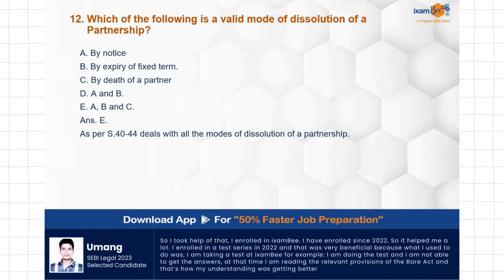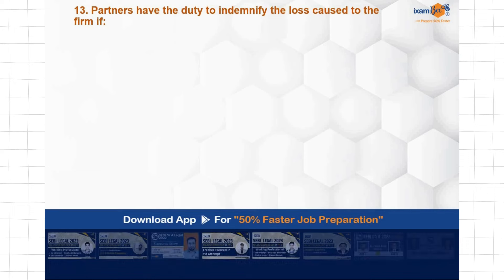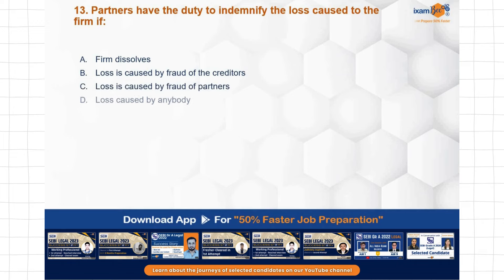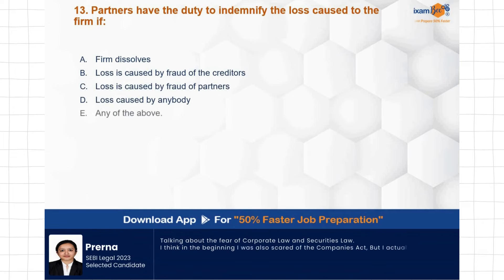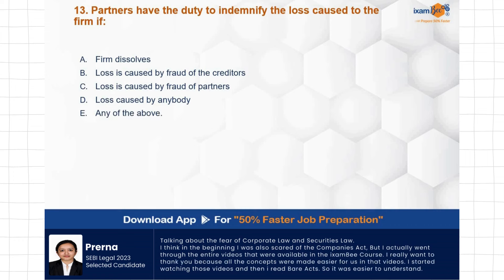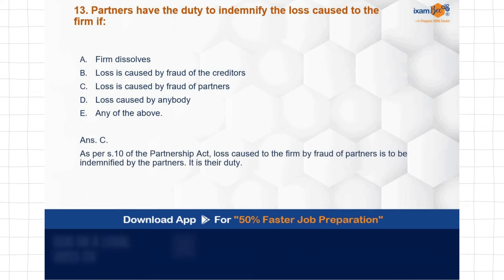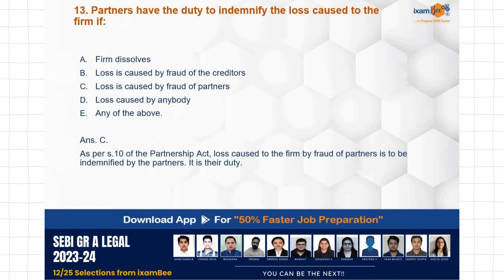Question: Partners have the duty to indemnify the loss caused to the firm if — the firm dissolves, the loss is caused by fraud of the creditors, the loss is caused by fraud of the partners, loss caused by anybody, or any of the above. The correct answer is C — loss caused by fraud of the partners. At that time partners have the duty to indemnify. Section 10 covers this.